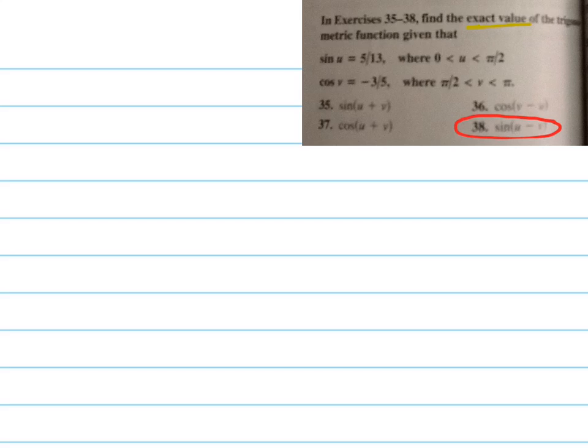It says that because you can use these trig identities. I'm going to do number 38. The trig identities, sum and difference identities, and then you can use the triangle that you create with this to determine the exact value.